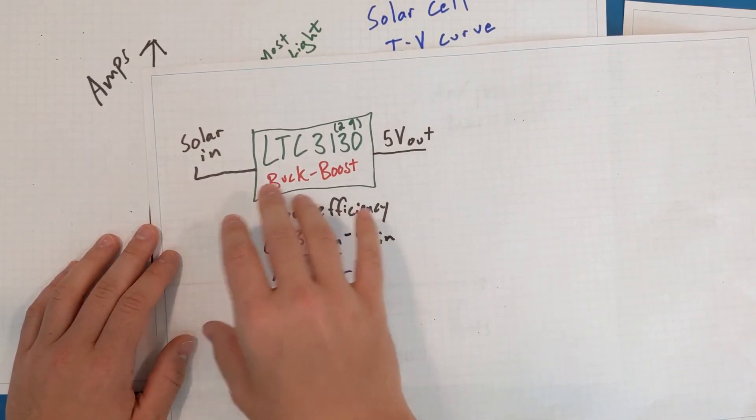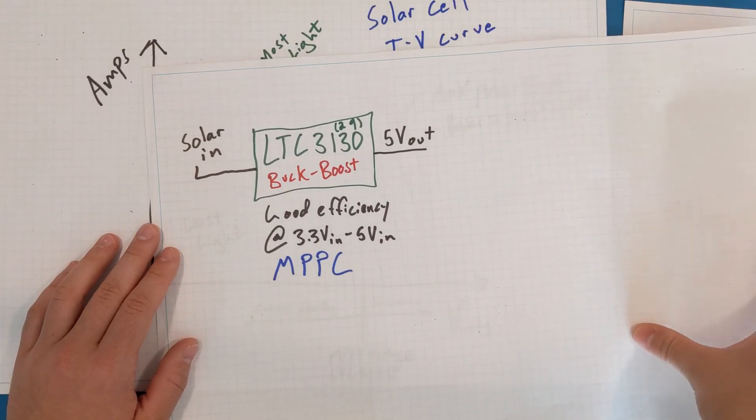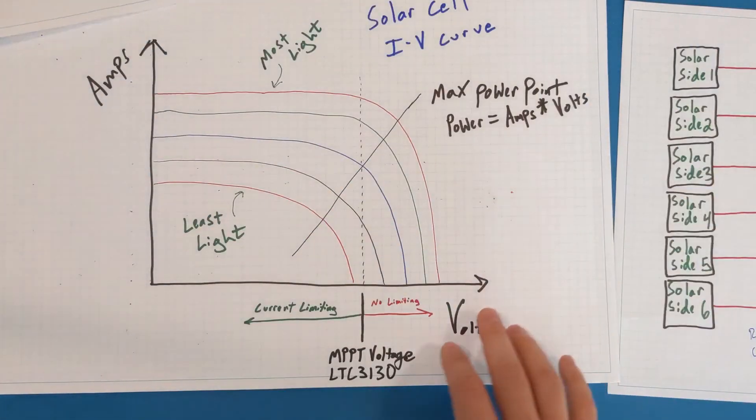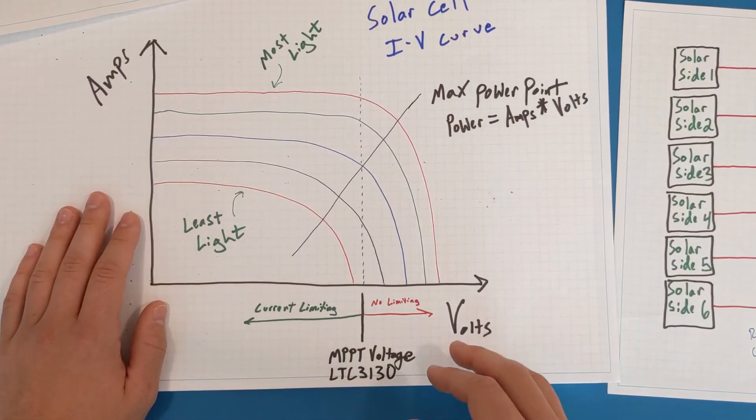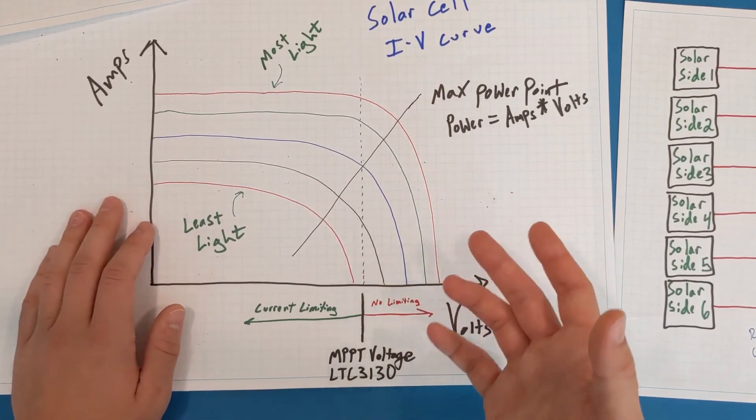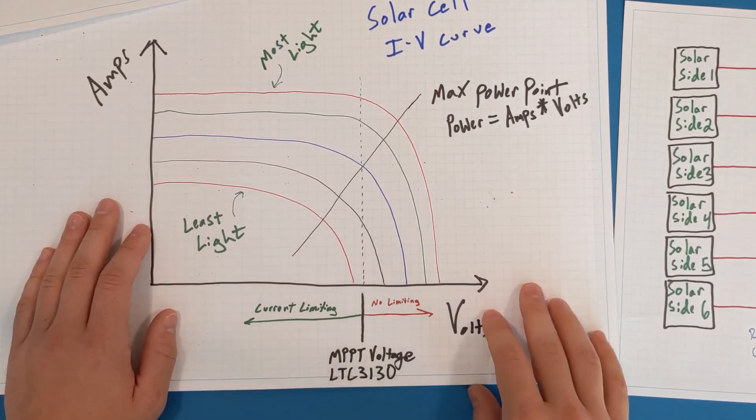Also, the chips I found with the better maximum power point tracking algorithm, they were explicitly for a higher voltage input, which in theory I could do, but I decided not to at this time.